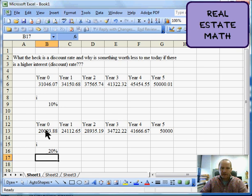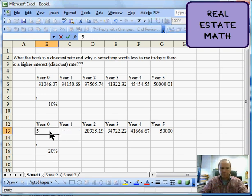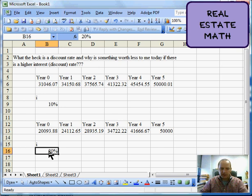Because, again, think about it. If I took $20,000 and invested it at 20%, after five years I would have the $50,000. And if I had only invested it at 5%, let's change it down here to 5%, it would be worth $39,000 because I would have to have $39,000 invested in the first year to get up to $50,000 in the fifth year.